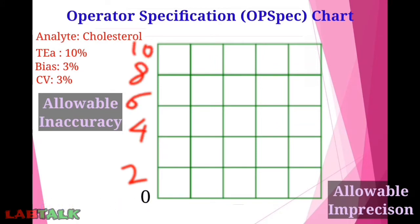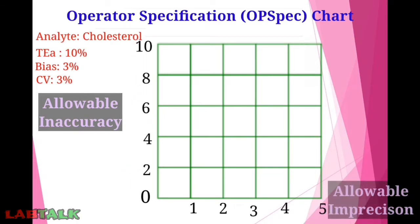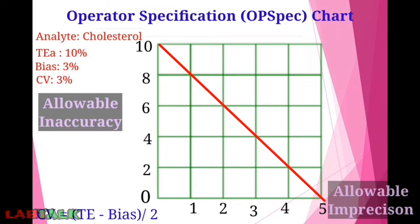On the x-axis for allowable imprecision, using the formula CV = (total error − bias) / 2: if bias equals zero, CV = total error / 2. So the maximum imprecision will be 5, that is total error divided by 2. At the 2-sigma level, total allowable error / 2 = 5. We draw a slanting line from 10 on the y-axis to 5 on the x-axis.